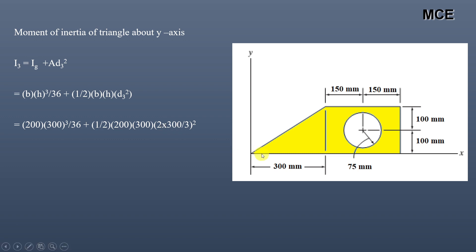The distance between the centroid of this triangle and the y-axis: we know that the centroid of the triangle from the apex equals 2h/3. Here h is 300 mm, so the distance is 2 × 300/3 mm. The moment of inertia of this triangle about the y-axis equals 1350 × 10⁶ mm⁴.